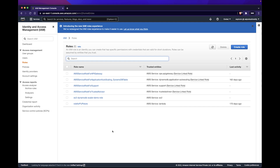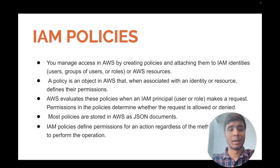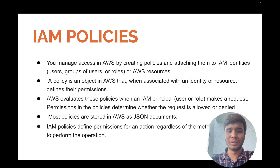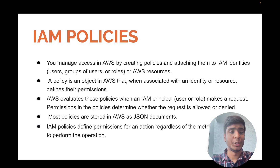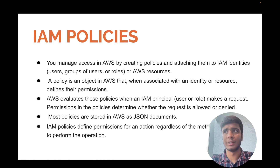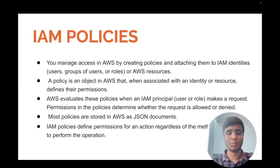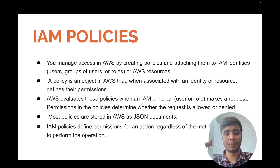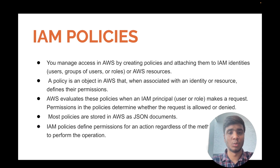Moving on, let's understand what exactly IAM policies are. I've been talking about policies while discussing IAM. Policies are basically — you have your identities (users, groups, roles, etc.) and these need some accesses attached to them. How do you attach accesses using IAM policies? A policy is basically an object in AWS that, when associated with an identity, is used to define the permissions. Plainly speaking, it's a text file — more precisely a JSON formatted file with a specific format. Using that format, you can add permissions in a granular way to your identities.